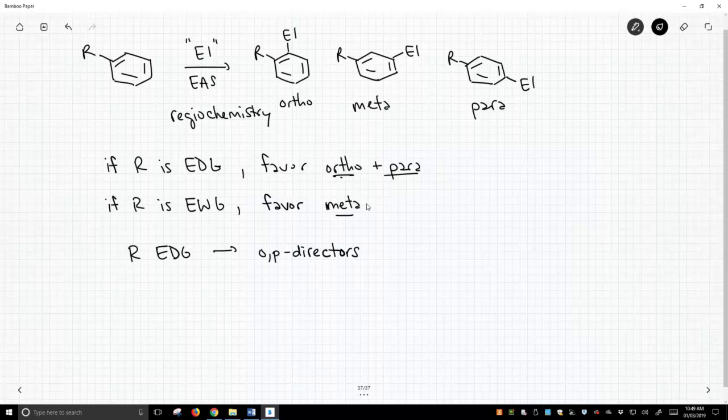And note, even though they favor ortho and para, para tends to predominate. It's not perfect, but you tend to get mostly para with an ortho-para director. You also refer to electron-donating groups as activators of the ring.